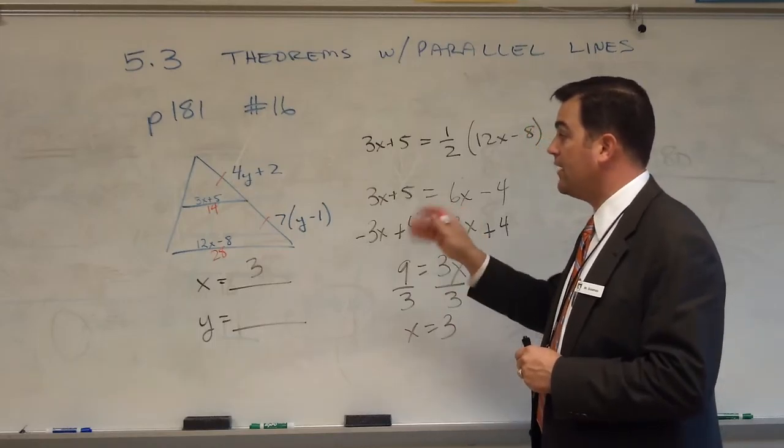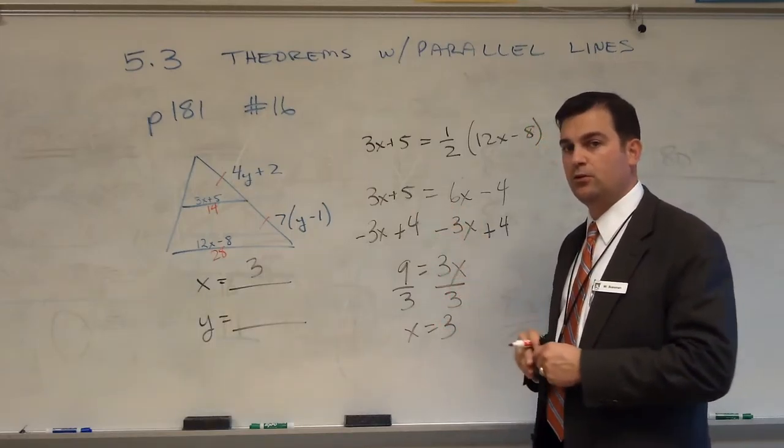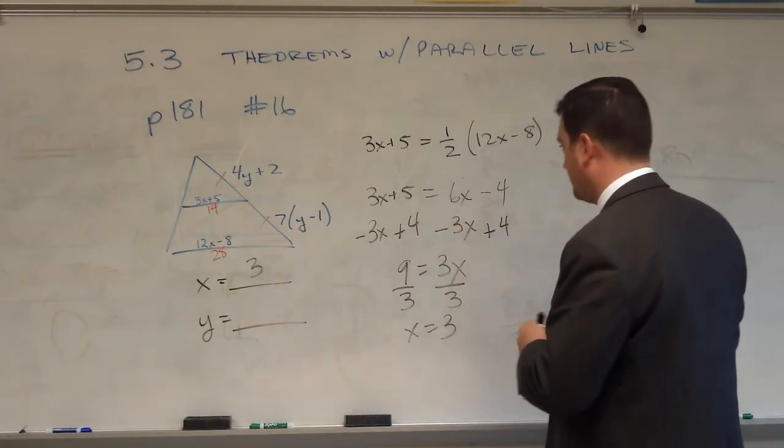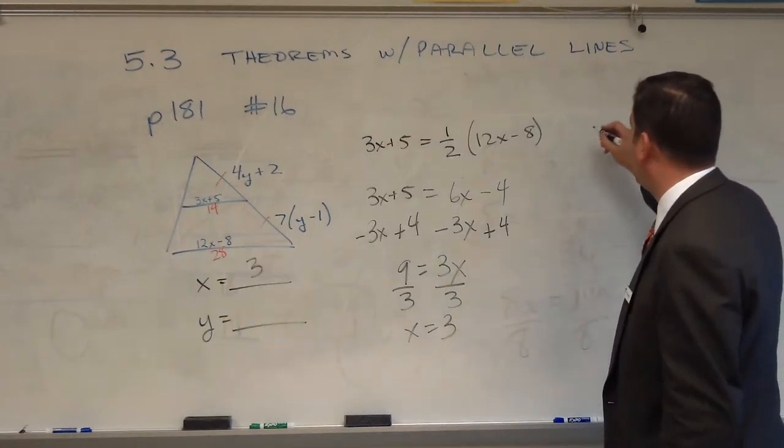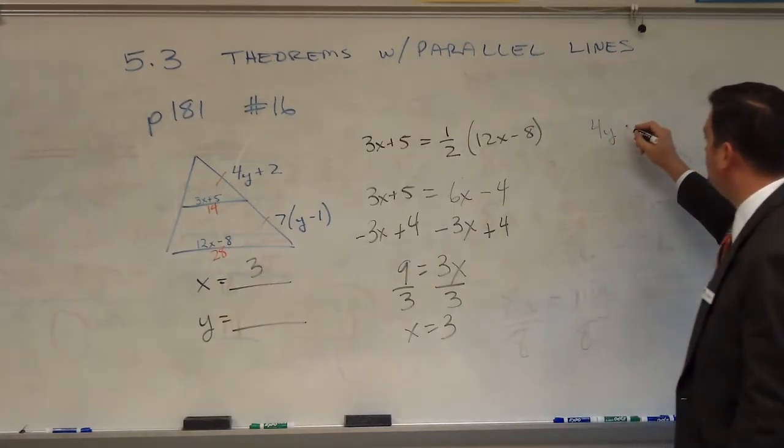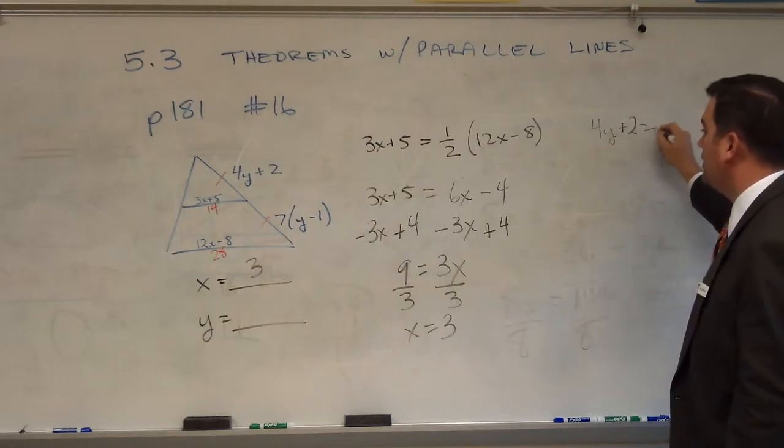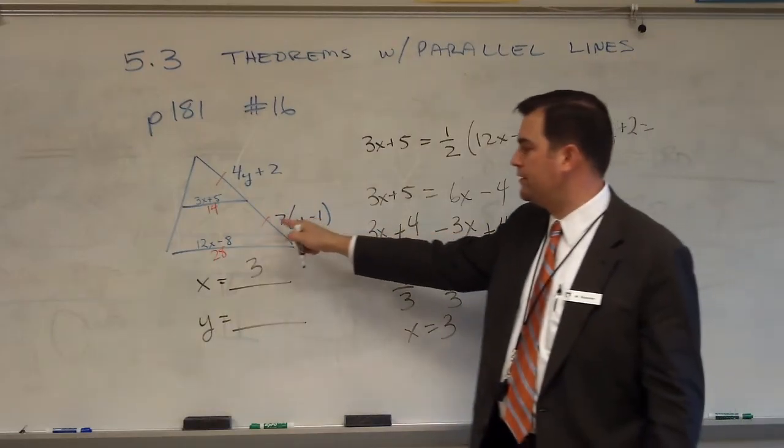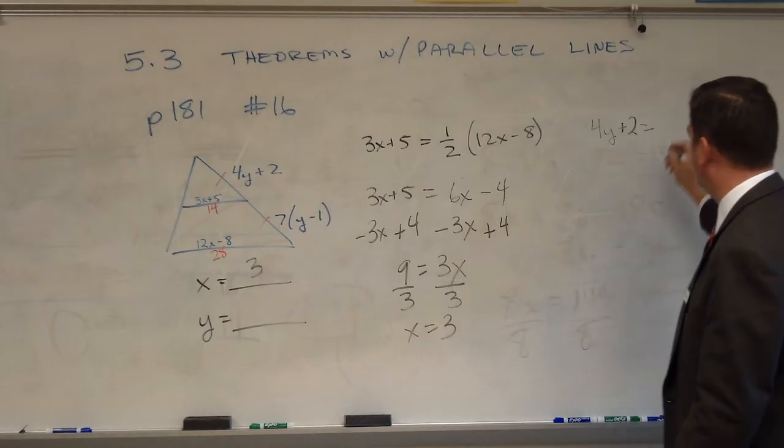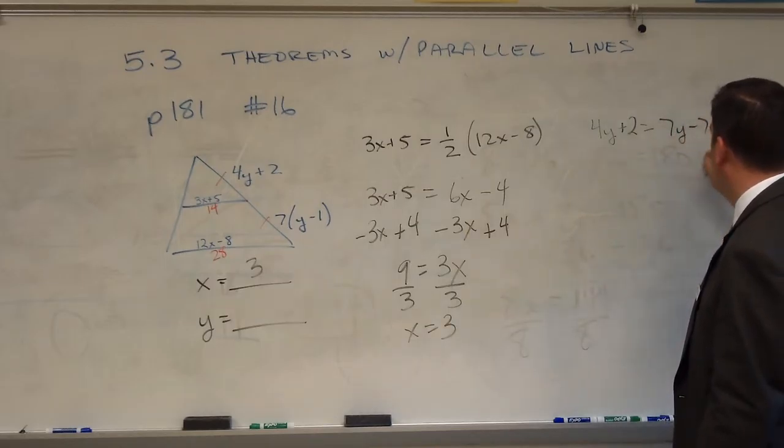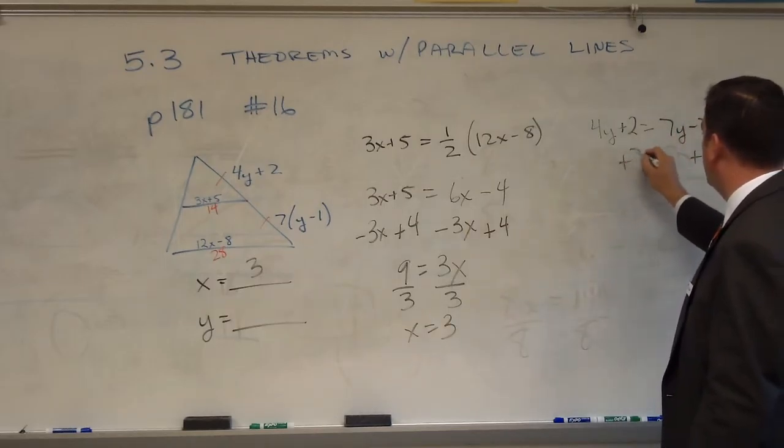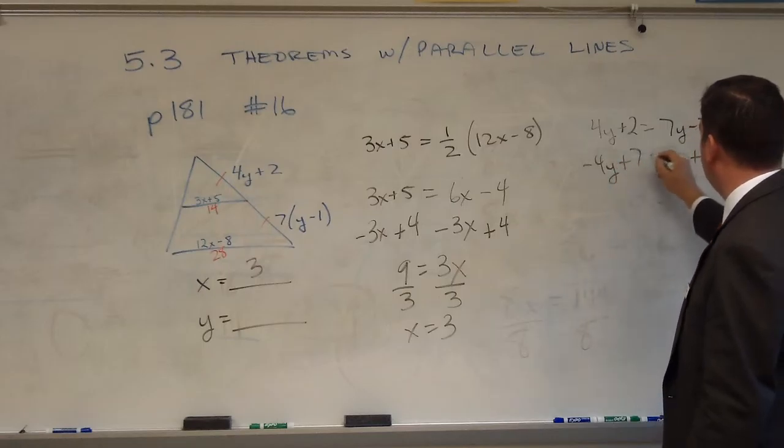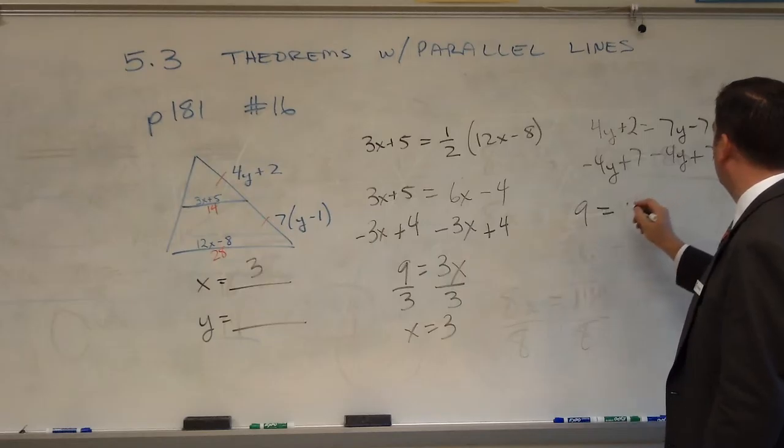Now let's solve for y. If this is a median line, then this is the midpoint of this side of the triangle. Therefore, I know that this line segment is congruent to that line segment. If that's the case, then I just set these two equations equal to each other. So I know that 4y plus 2 will equal, and I'm just going to distribute this 7, 7y minus 7.